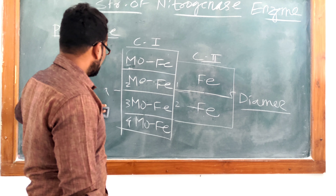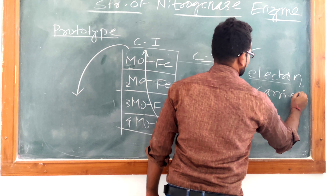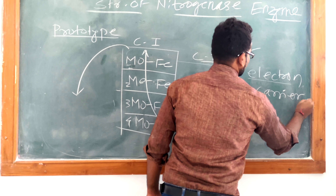The electron travels in this fashion: there is an electron carrier that takes electrons and gives them to Component 2. Component 2 transfers those electrons to Component 1, and Component 1 converts molecular nitrogen into ammonia. This is just a prototype; we will discuss each detail further.